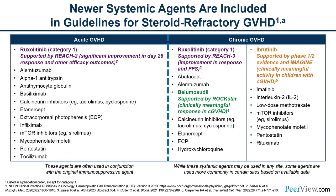In chronic graft-versus-host disease, we have a few more FDA-approved drugs. Ruxolitinib was supported by the randomized phase 3 REACH-3 trial, comparing it to other available agents in chronic GVHD patients who had failed steroid therapy. We also have ibrutinib, a BTK inhibitor, and belumosertib, a ROCK2 inhibitor, which have also received FDA approval based on single-arm studies showing good overall response rates. Many clinicians are now leaning towards these more targeted FDA-approved agents, though more traditional immunosuppressive therapies still have a role.